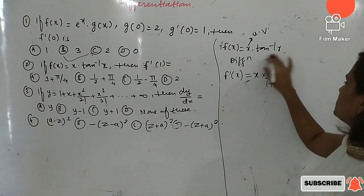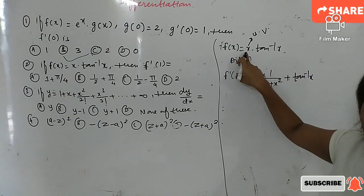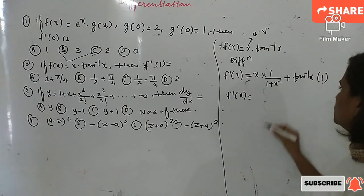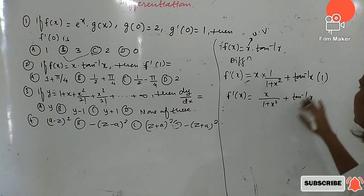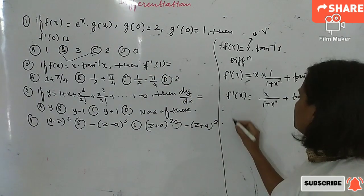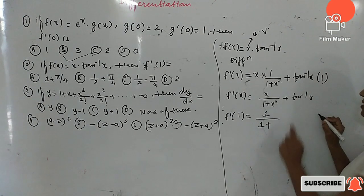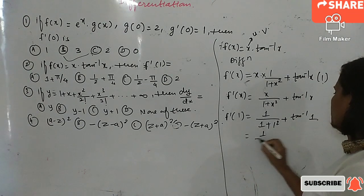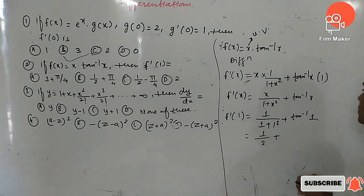Plus the second function tan⁻¹(x) is constant, and the derivative of the first function x with respect to x is 1. So f'(x) = x/(1 + x²) + tan⁻¹(x). To find f'(1), replace x by 1: f'(1) = 1/(1 + 1²) + tan⁻¹(1) = 1/2 + tan⁻¹(1).